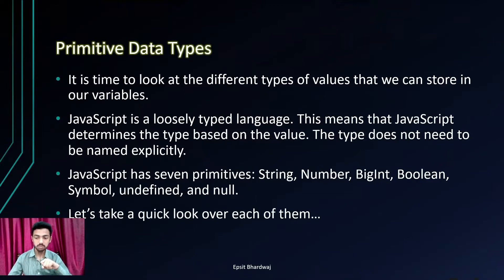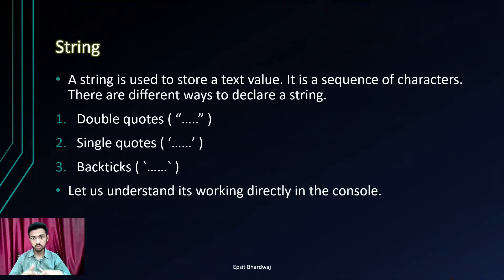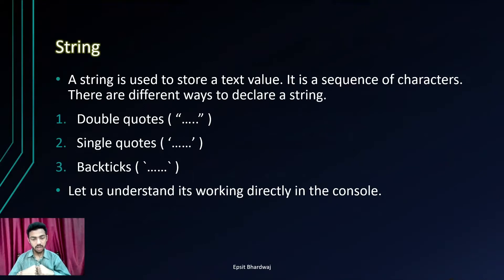First comes our String. A string is used to store a text value. It is a sequence of characters and there are different ways to declare a string. First is double quotes, second is single quotes, and third is backticks. Let us understand its working directly in the console.